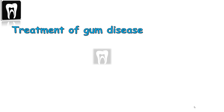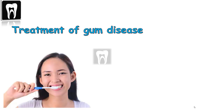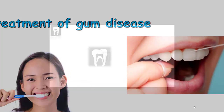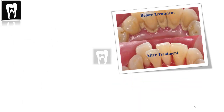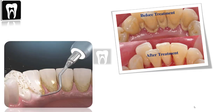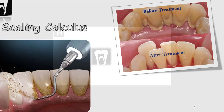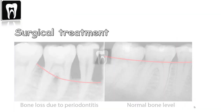Treatment of gum disease depends on the severity. For gingivitis, good oral hygiene habits like brushing twice a day, flossing, and using mouthwash can reverse it. If you have plaque and tartar that is hard to remove, you need to see a dental professional for a dental cleaning like descaling to get rid of the tartar. For periodontitis, the same good oral hygiene applies as non-surgical treatment, but if there is severe bone loss, surgical treatments may be needed.